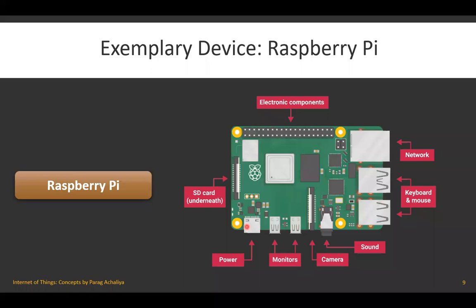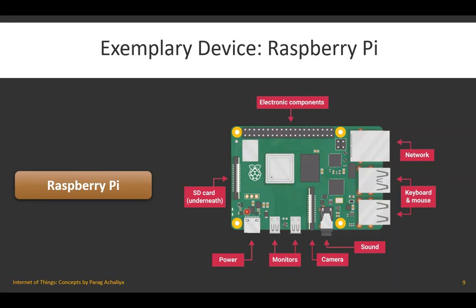The power supply port accepts a standard mobile charger to power the Raspberry Pi. Once powered, there are two LEDs: red glows when power is supplied, and green starts glowing when the Raspberry Pi begins to boot — similar to the power and hard disk LEDs on a desktop CPU.